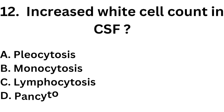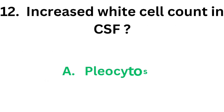Question number twelve: increased white cell count in CSF — option A: pleocytosis, option B: monocytosis, option C: lymphocytosis, option D: pancytosis. Increased white cell count in CSF is called pleocytosis, so the correct answer is option A. Monocytosis is increased monocytes, lymphocytosis is increased lymphocytes, and pancytosis is the overproduction of blood cells.